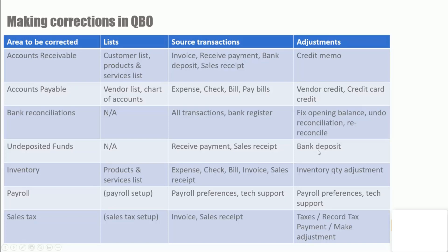For inventory, you would manage that in the products and services list — look at inventory items there. Source transactions are expense, check, bill, invoice, and sales receipts. To adjust inventory, you want to use an inventory quantity adjustment.